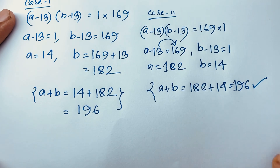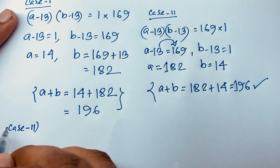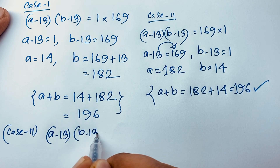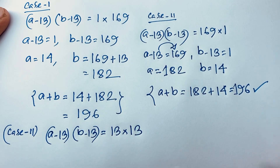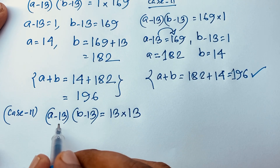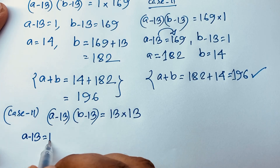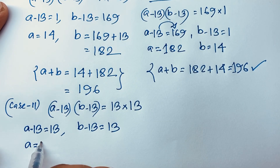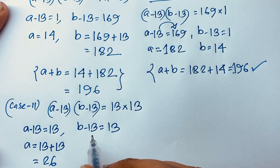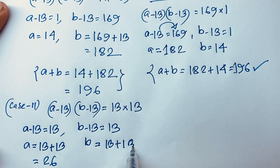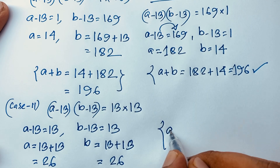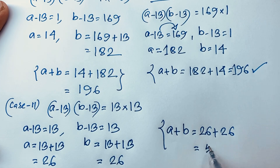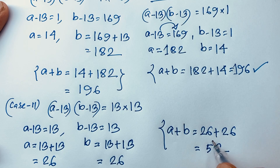But Case 3: (A minus 13) times (B minus 13) equals 13 times 13. So A minus 13 equals 13, and B minus 13 equals 13. Then A is equal to 13 plus 13, which is 26, and B is equal to 13 plus 13, which is also 26. So A plus B equals 26 plus 26, which is 52. We find our final answer: A plus B is equal to 52.